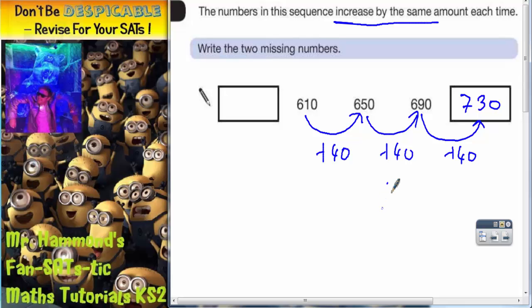If you couldn't do it in your head you could do a very quick column method. So 690 add 40, 0 plus 0 is 0, 9 plus 4 is 13, carry the 1, 6 plus 1 is 7.